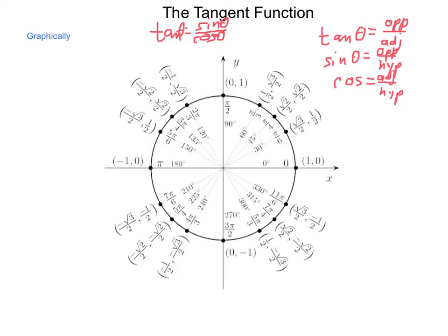So, if we take our unit circle, as shown here, and divide each y value, which is the sine of that angle, by the x value, the cosine, we will end up with our tangent values. So, what is 0 divided by 1? That is 0.